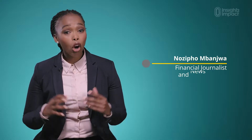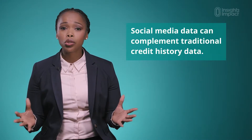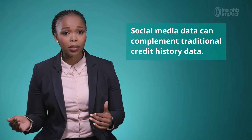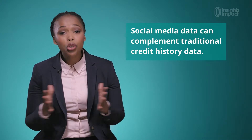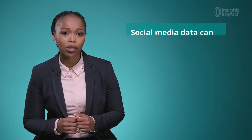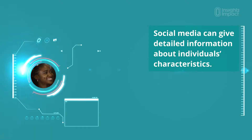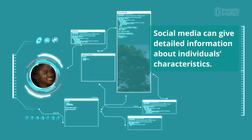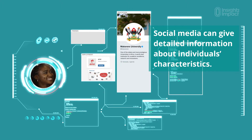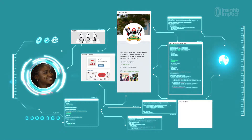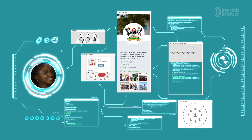Social media data can complement traditional forms of data like credit bureau data to assign credit scores to existing and new customers who potentially have no existing financial history. This data, provided by a consenting credit applicant, can provide FSPs with detailed information on the characteristics of an individual, including education, employment, number of friends or followers, and frequency of social interactions.